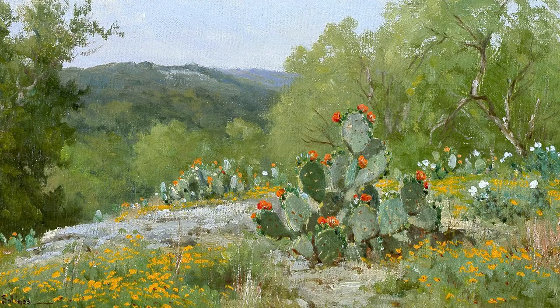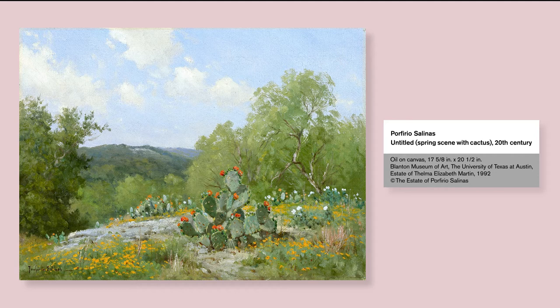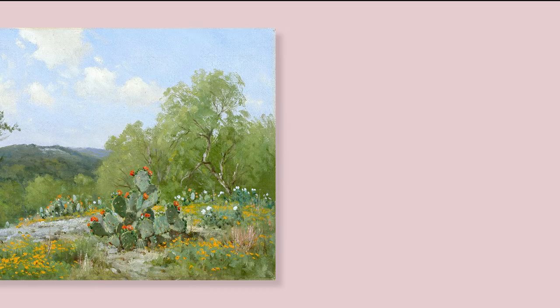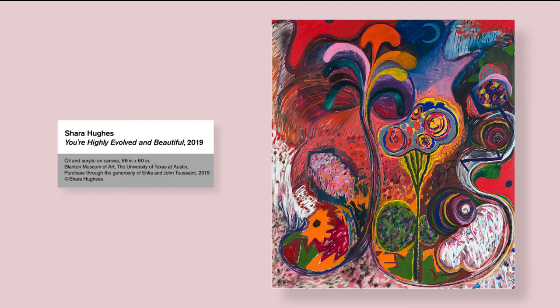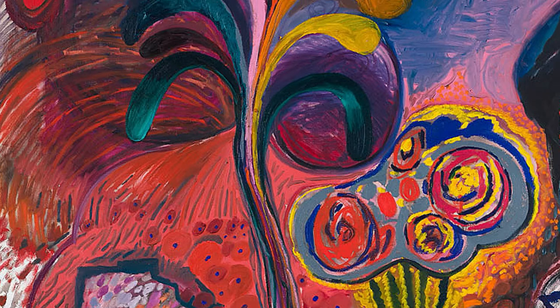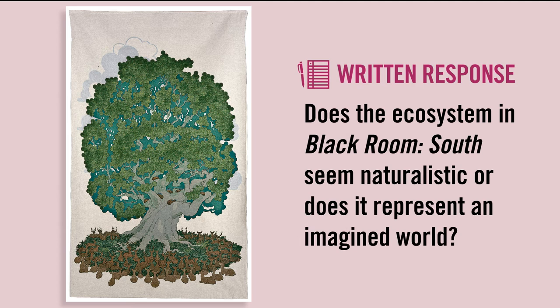Artists sometimes choose to create works that reflect the world around them. In art, we call this naturalistic. You can see an example of this from the Blanton's collection in Untitled Spring Scene with Cactus by Porphyria Salinas. Doesn't this painting look just like a landscape you might see on a hike here in the hill country? Other times, artists choose to create something out of their imagination. An example of this from the Blanton is Shara Hughes' You're Highly Evolved and Beautiful. This vibrant painting appears to be a landscape featuring flowers and plants, but they're unlike any I've ever seen. Does the ecosystem in Black Room South seem naturalistic, or does it seem to represent an imagined world that references the natural world? Let's pause and respond.